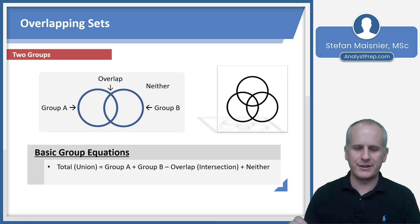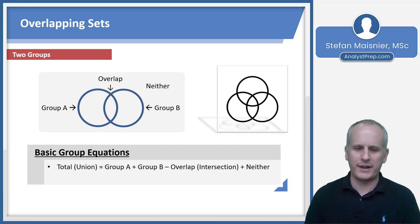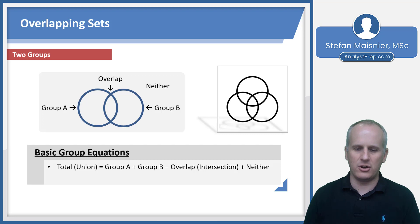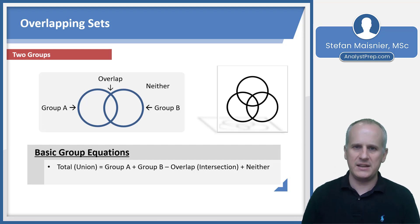Plus those that are in neither of the two groups. Because if Bill is in group A and also in group B, I count Bill twice — which is why I have to subtract out the overlap. I want to count each person only once in the total union of the two groups.